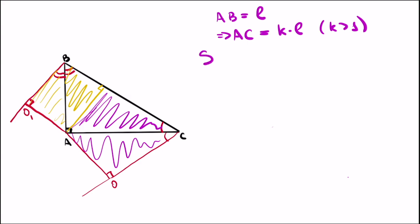So now, if we denote the area of the smallest triangle, BO1A, as S, then the area of the next biggest triangle, AOC, will be k squared times S,